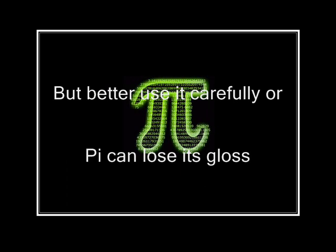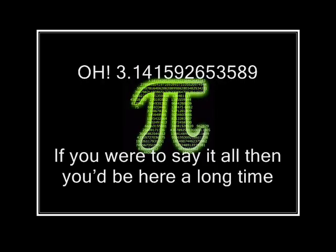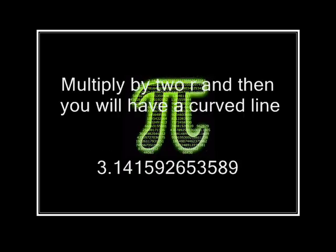But better use it carefully or Pi can lose its gloss. Ahem! For instance, why not have used it on some trig? And now my sign's a cost. Oh, 3.141592653589. If you were to say it all then you'd be here a long time. Multiply by 2R and then you will have a curved line. 3.141592653589.